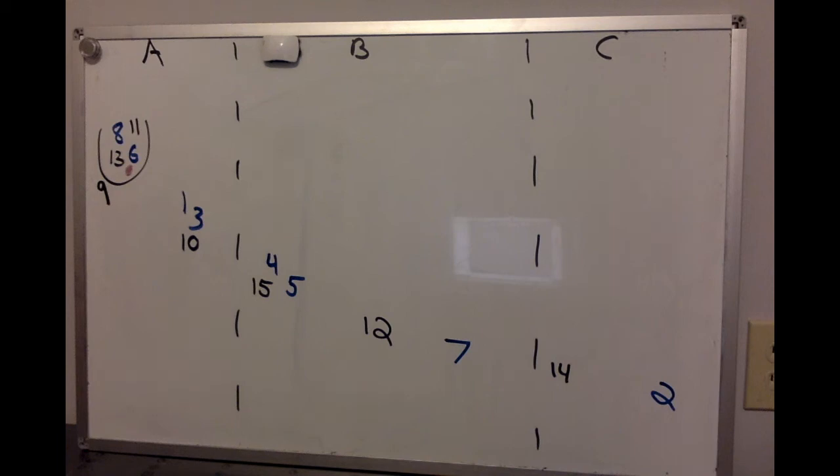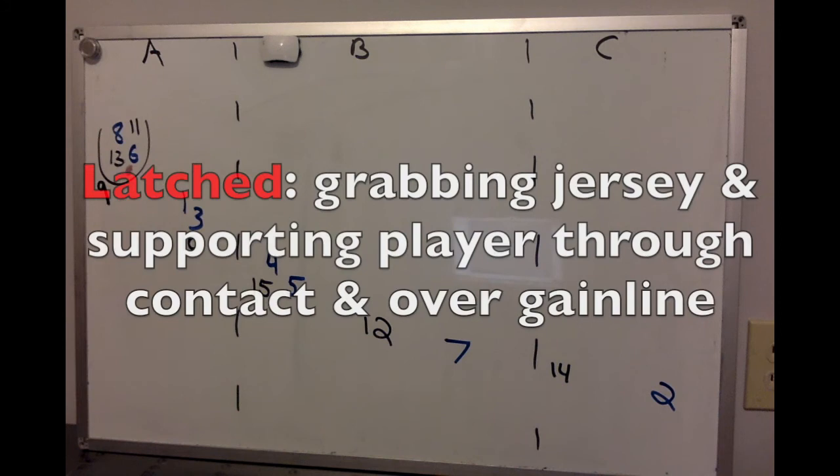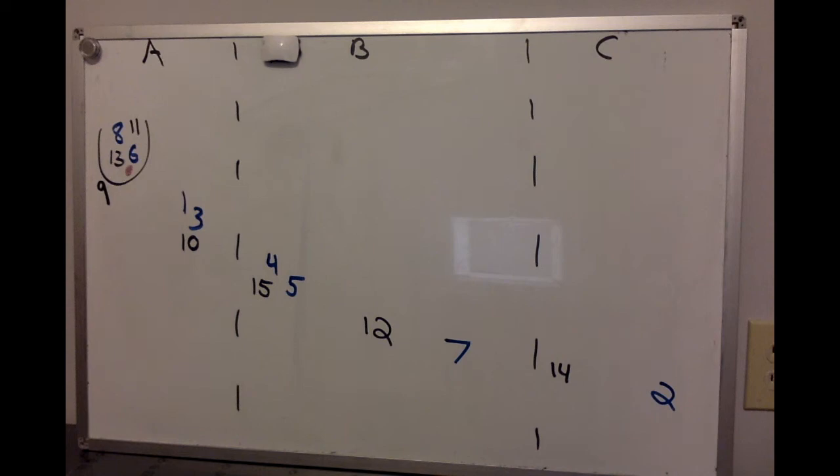3 is in support — he is not a meter away, he is not 2 meters away, he is essentially latched on to number 1. Because as soon as 1 takes it in, 3 is going to be there to ruck over. We want him on 1's hip, essentially holding his shirt, helping him over the gain line and into contact.